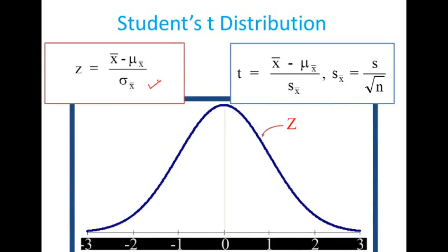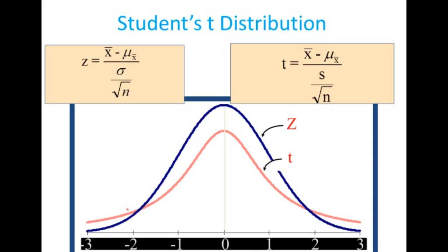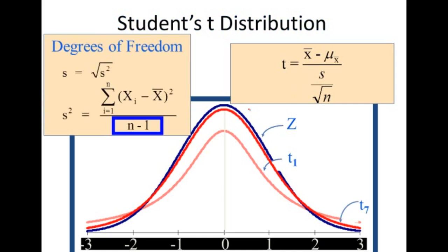The z-score is: x-bar minus mu divided by sigma_x-bar. For t, it is: x-bar minus mu divided by the estimated sigma — that is s over square root of n. The t-distribution is slightly flatter than z-distribution; z is the peaked distribution. When we use the unbiased estimate (dividing by n minus 1 degrees of freedom), the t-distribution becomes closer to z-distribution.